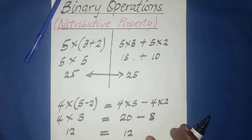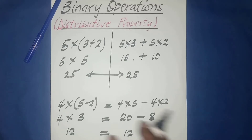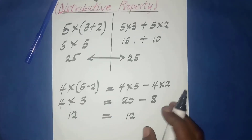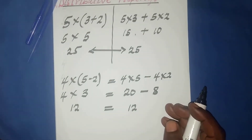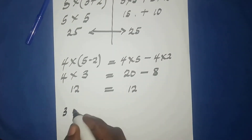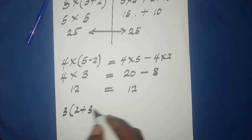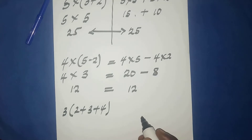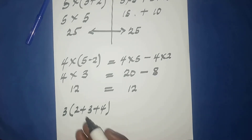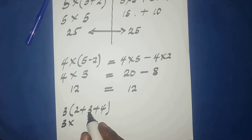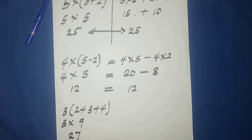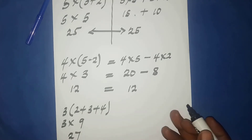That is why the distributive property is a way of rewriting the basic order of operations in a different form. It doesn't matter if you have more than two quantities in the bracket. For example, three times the quantity two plus three plus four: using order of operations, three times two plus three is five, plus four is nine, so three times nine equals twenty-seven.